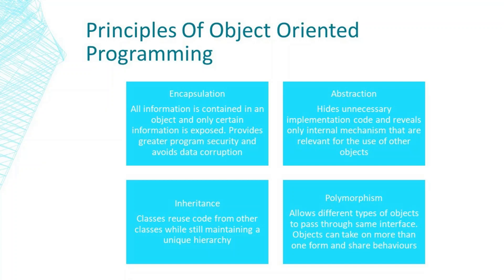The principles of object-oriented programming are encapsulation, abstraction, inheritance, and polymorphism. Encapsulation means all information is contained in an object and only certain information is exposed — it provides greater program security and avoids data corruption. Abstraction hides unnecessary implementation code and reveals only the internal mechanisms relevant for the use of other objects. Inheritance allows classes to reuse code from other classes while still maintaining a unique hierarchy. Polymorphism allows different types of objects to pass through the same interface, so objects can take on more than one form and share behaviors.